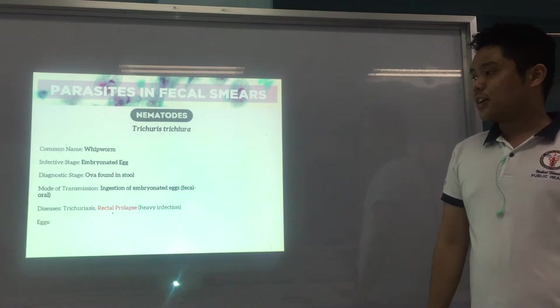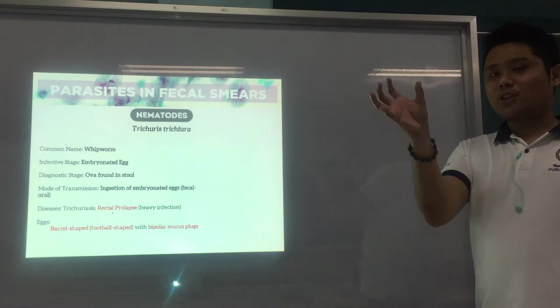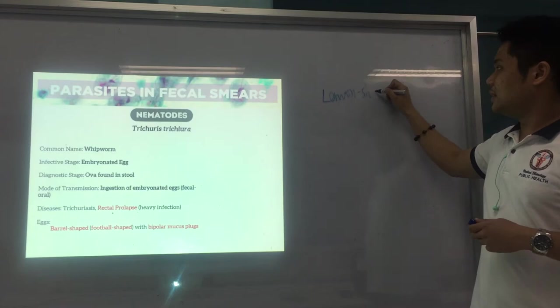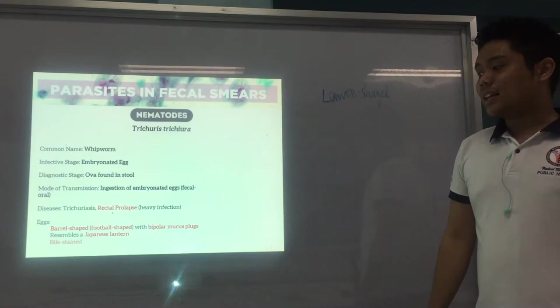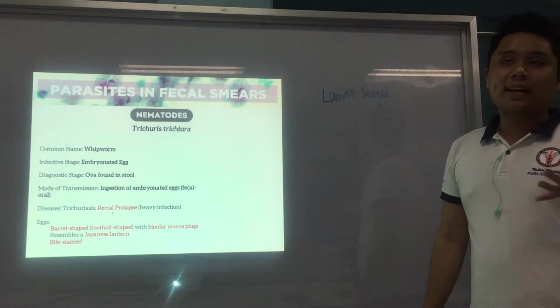The eggs are described as barrel-shaped, football-shaped, or lemon-shaped, with bipolar mucus plugs — meaning both ends have plugs. Another description is that it resembles a Japanese lantern. The eggs are also bile-stained, the same as Ascaris, so the color is golden brown because of the bile stain.